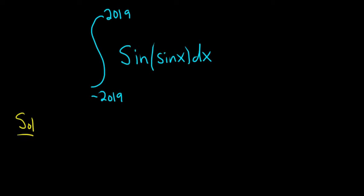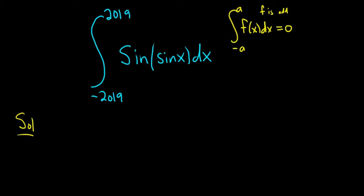To do this, recall that whenever you have a function f being integrated over a symmetric interval from negative a to a, and the function is odd, the answer is just zero. In this problem, we have negative a on the lower bound and a on the upper bound, so we just have to confirm that f is odd.